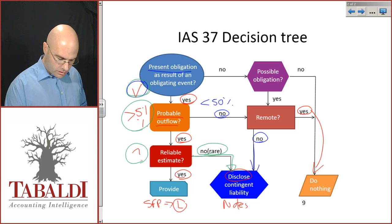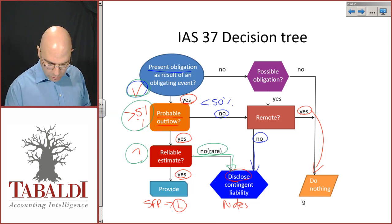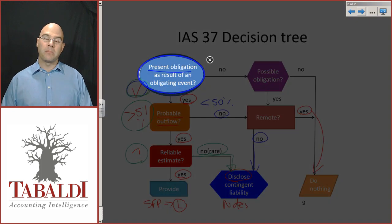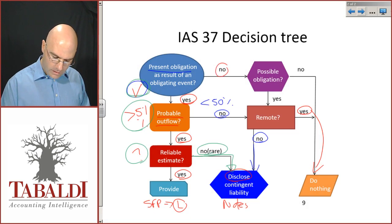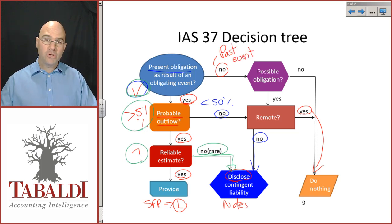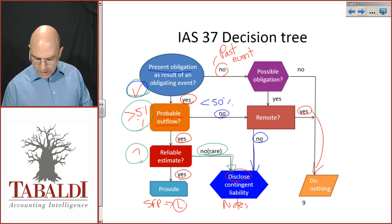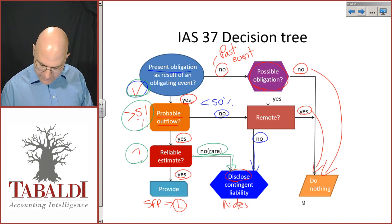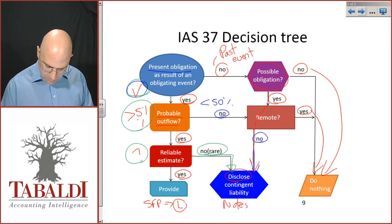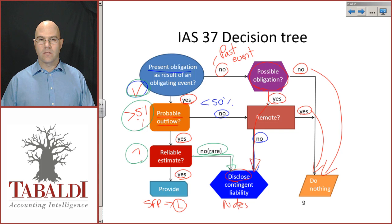Now let's talk about the scenario where I start with the present obligation question and I say no — there is no present obligation, no past event. It may be a future event or a possible obligation. I then ask: is there actually a possible obligation? If no, I do nothing and disclose nothing in the notes. If yes, there is a possible obligation, then I filter through and disclose a contingent liability.